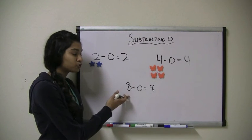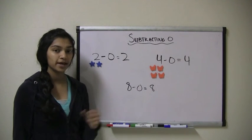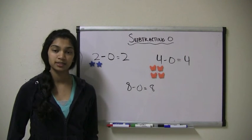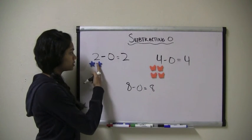This is because if you start out with a number and you don't take away any, the number remains the same, just like we see here.